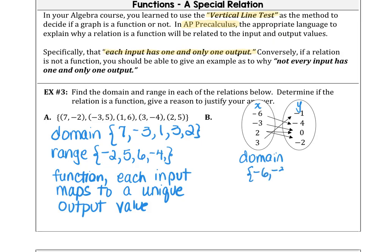-6, -3, 2, and 3. The range would be all the y coordinates or the output values: -1, -4, -2, and 0.